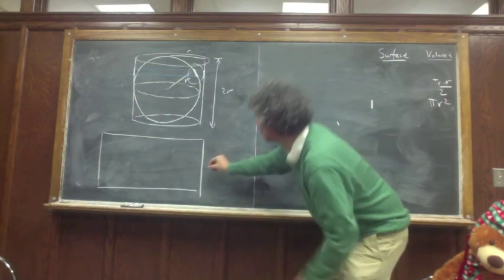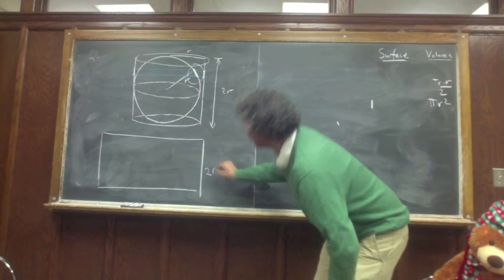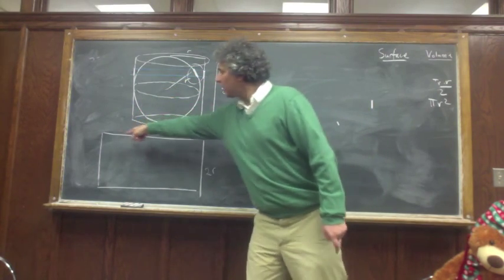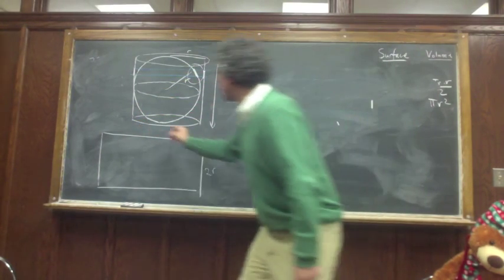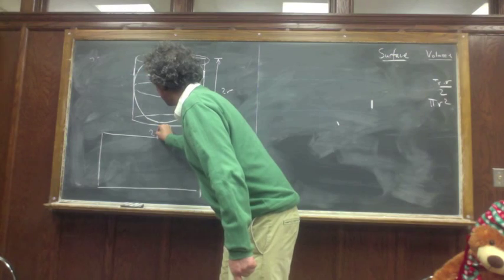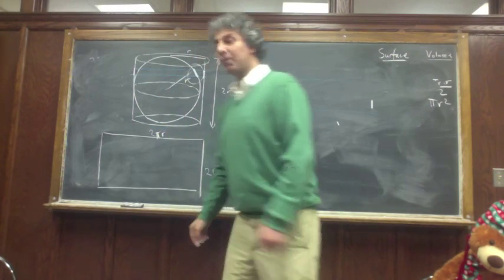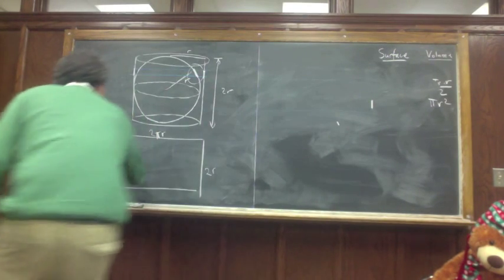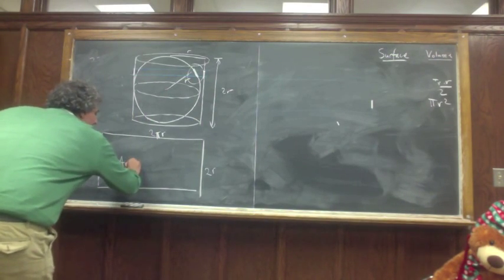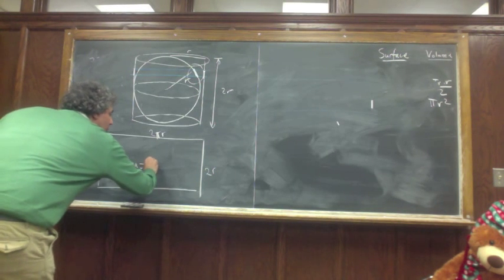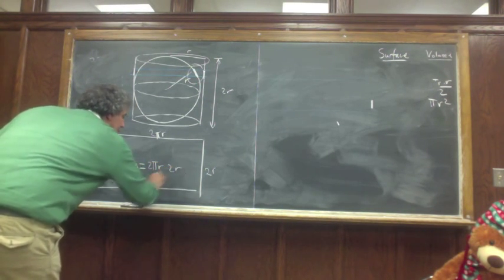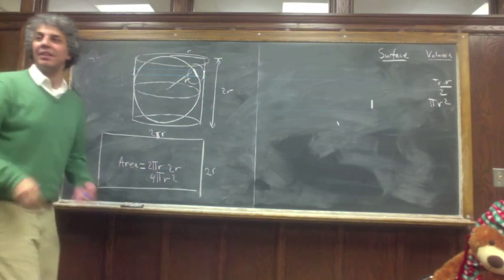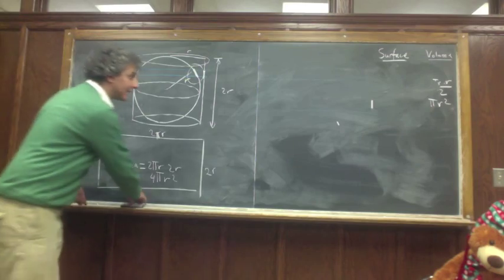Remember, the height is 2r and the radius was r. So if I unfold it, the perimeter would be 2 pi r. Now I have the area: the area is 2 pi r times 2r — that is 4 pi r squared. Let's write this down.